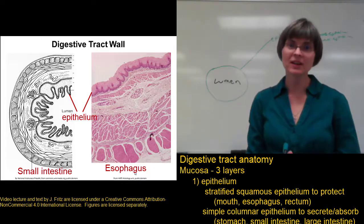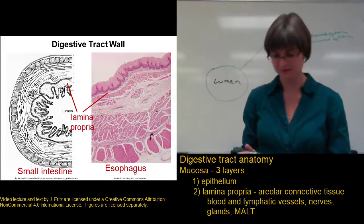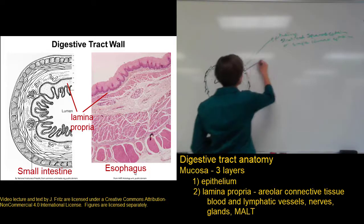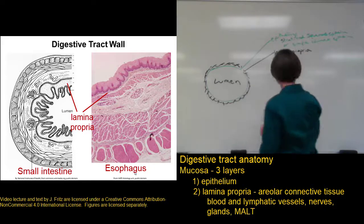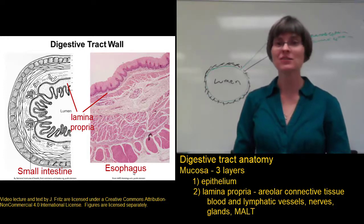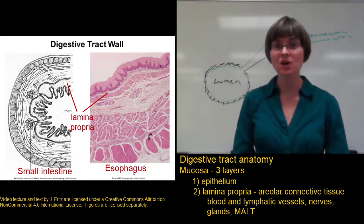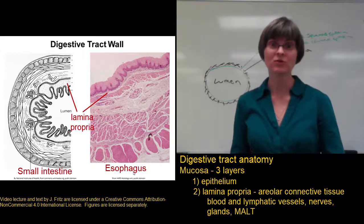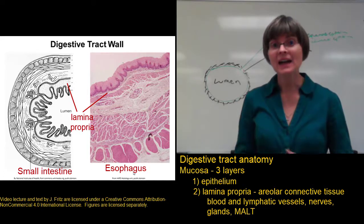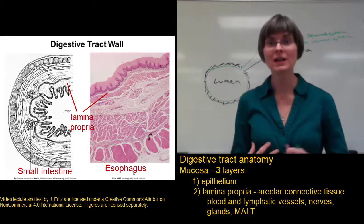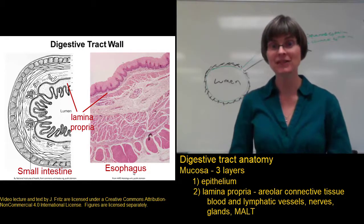Deep to that epithelial layer, we have a little layer of connective tissue called the lamina propria. The lamina propria contains the blood vessels that are going to be absorbing the nutrients out of the lumen of the small intestine and transporting them to the rest of the body. It also contains lymphatic vessels, which are important for absorbing fats, as well as nerves and glands, and also MALT — the mucosa-associated lymphatic tissue — found in the lamina propria to help protect the digestive tract from pathogens coming in on your food.